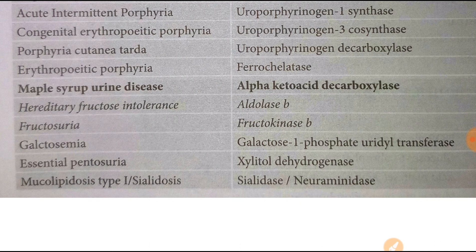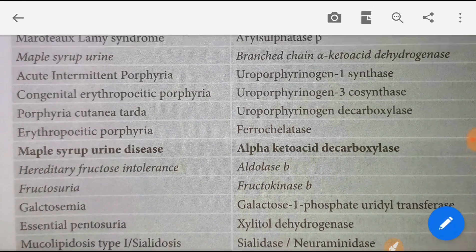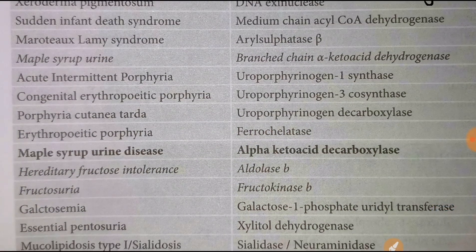Maple syrup urine disease — alpha-ketoacid decarboxylase. Hereditary fructose intolerance — aldolase B. Fructosuria — fructokinase deficiency. Galactosemia — galactose-1-phosphate uridyl transferase. Essential pentosuria — xylitol dehydrogenase. Mucolipidosis type I (sialidosis) — sialidase or neuraminidase deficiency. These are all commonly asked in NEET and PG exams.